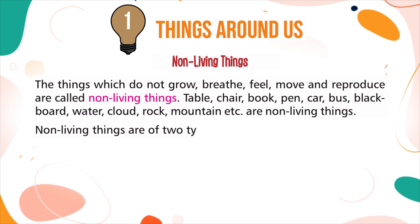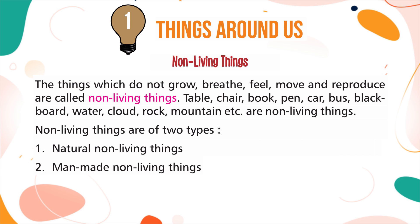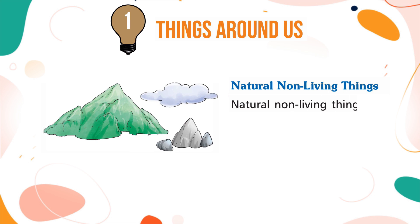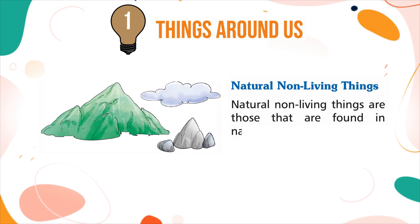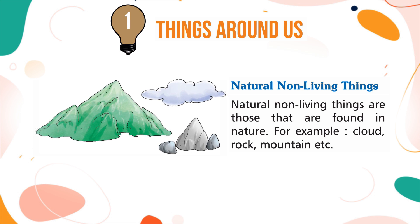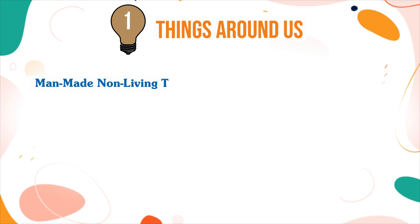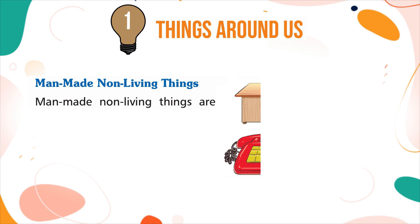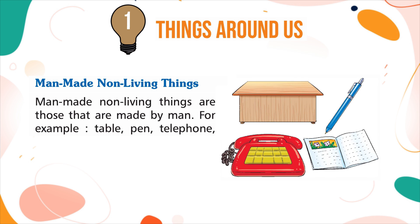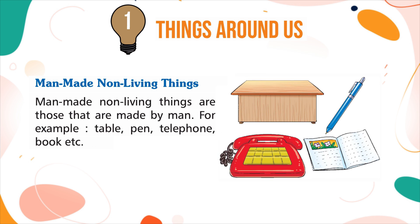Non-living things are of two types: natural non-living things and man-made non-living things. Natural non-living things are those found in nature — for example, cloud, rock, mountain, etc. Man-made non-living things are those made by man — for example, table, pen, telephone, book, etc.